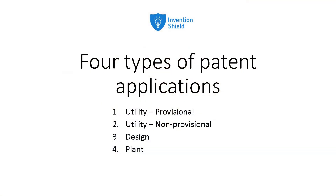The four types you need to know about are a utility application, which has two variations — a non-provisional and a provisional. The second type is a design application, and the third is a plant application.